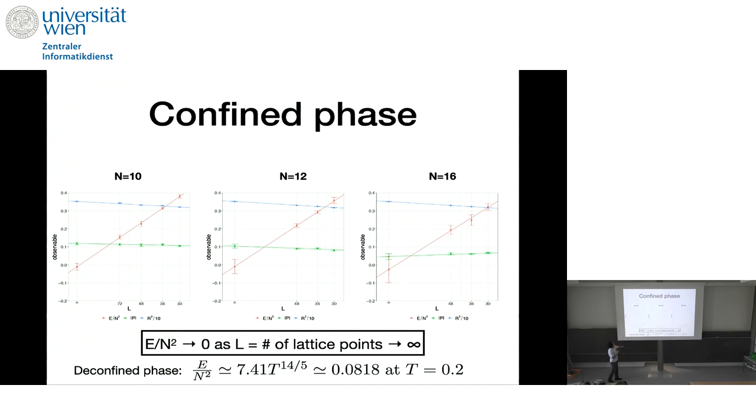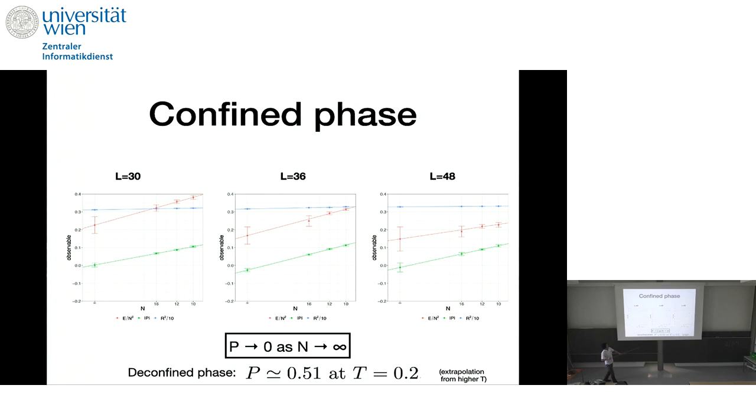And here, and so I say zero, but how close to zero? So if we use this formula from supergravity, the energy must be 0.0818, which is around here, which is significantly larger than zero. So this is clearly zero compared to this. It cannot be deconfined phase, which is related to black zero-brane. And if we extrapolate the value of Polyakov loop from high temperature data, we have to put some assumption. But we would expect the value of Polyakov loop to be 0.5 around this temperature, 0.2.